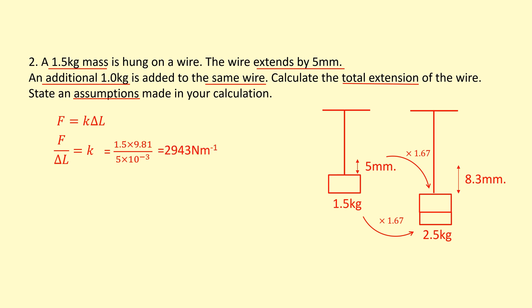And when I hang the new mass on it, the additional 1 kilogram, the spring constant isn't going to change. So we're going to use the same spring constant but we're going to put a new force on it. The new force is going to be 2.5 times 9.81. So that's a new force and the spring constant is the same. We can work out the extension. So it's extended to 0.083 meters.